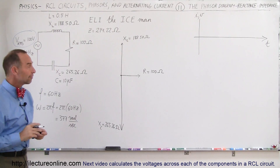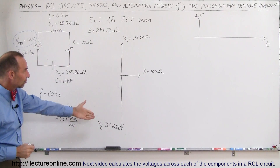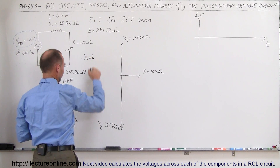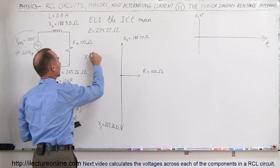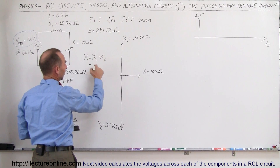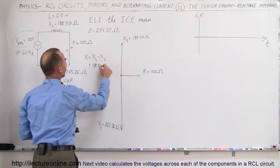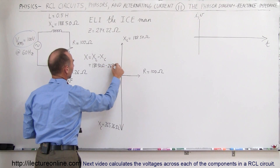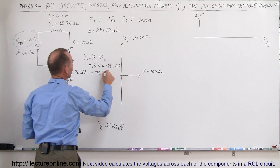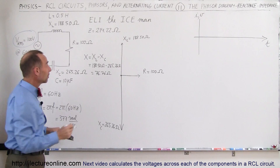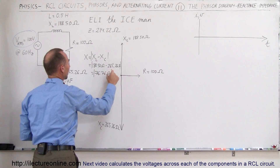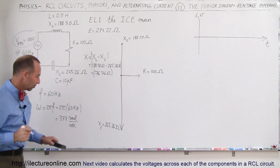So now how do we find the impedance of that circuit? First we're going to add the two reactances together. We know that the total reactance X is going to be equal to X sub L minus X sub C. So in this case, that's equal to 188.50 ohms minus 265.26 ohms, and that would be equal to negative 76.76 ohms. Now, I realize that's going to be a negative number, but when we find the reactance, we have to take the absolute value of that. So it's going to be the absolute value of negative 76.76 ohms.